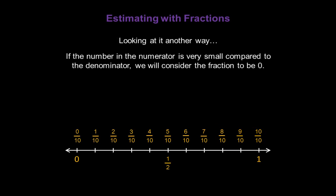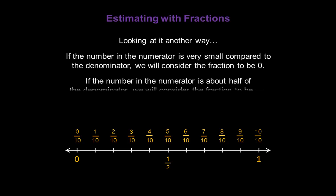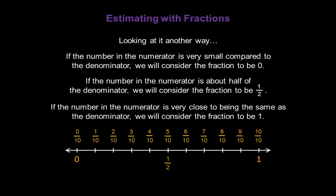Looking at it another way: if the number in the numerator is very small compared to the number in the denominator, we will consider the fraction to be 0. If the number in the numerator is about half of the number in the denominator, we will consider that fraction to be 1 half. If the number in the numerator is very close to the number in the denominator, we will consider that fraction to be 1.